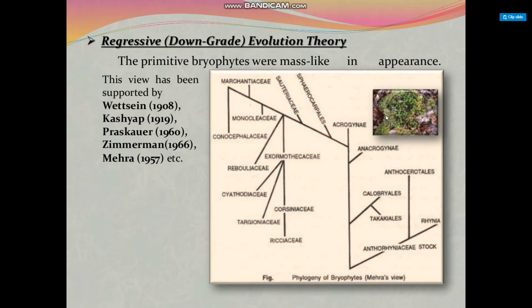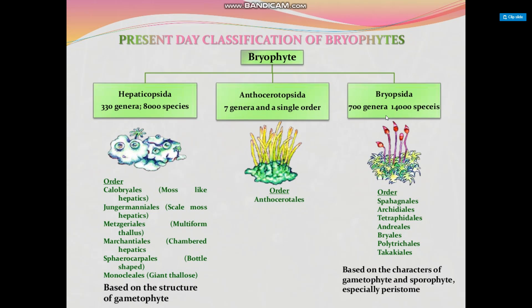The regressive and downgrade evolution theory holds that the primitive bryophytes were most like mosses in appearance. This view has been supported by Wettstein, Kashyap, Parihar, Zimmermann, and Mehta. The present-day classification of Bryophyta divides it into three classes: Hepaticopsida, containing 13 genera and 8,000 species; Anthocerotopsida, containing seven genera in a single order; and Bryopsida, containing 700 genera and 4,000 species. They are further classified based on the structure of the gametophyte.